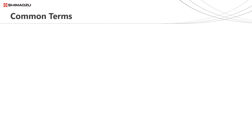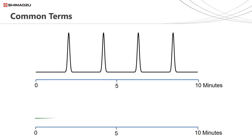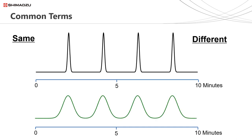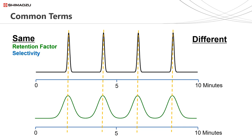I now want to introduce a number of terms and concepts which should be understood to continue building your knowledge in HPLC. The two example chromatograms on the slide show a number of similarities as well as differences. What is the same between these two chromatograms is the retention time and therefore retention factor of each of the four peaks. We can also say that the selectivity is the same — each peak elutes in the same order. What is different is the peak width, measured here at half the peak height. Because the width of these two peaks is different but the retention time is the same, we can also say that the peak efficiency is different. Lastly is resolution, which is a measure of how well two peaks are clearly separated — this is also different between these two chromatograms.